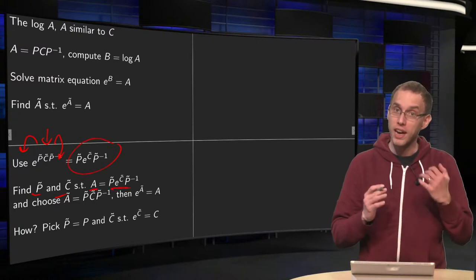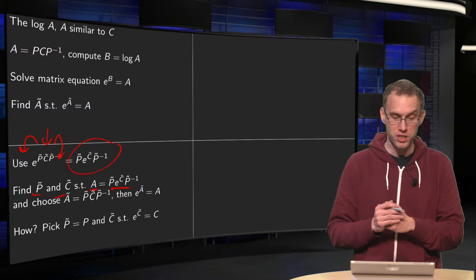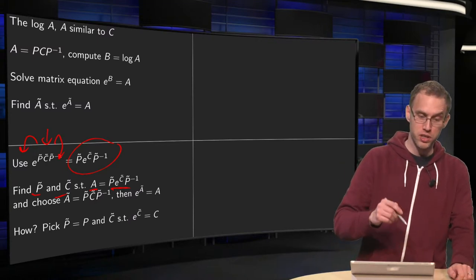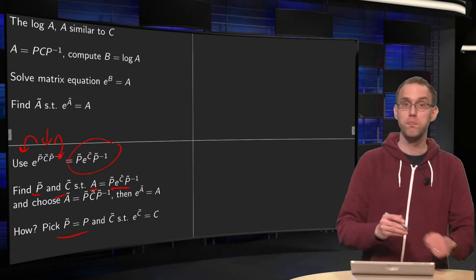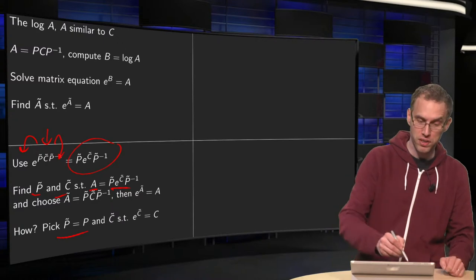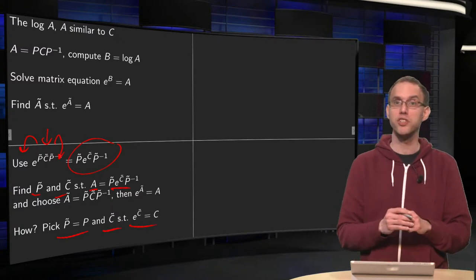This one, A has to be equal to P̃ e^(C̃) P̃ inverse, but we know A equals PCP inverse, so what do we do? First of all you pick P̃ equals P, that part is ok, and then you want to find C̃ such that e^(C̃) equals C.